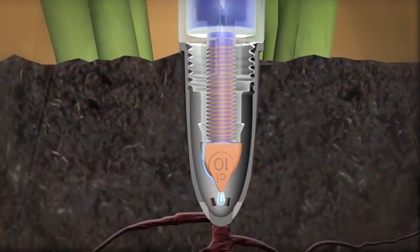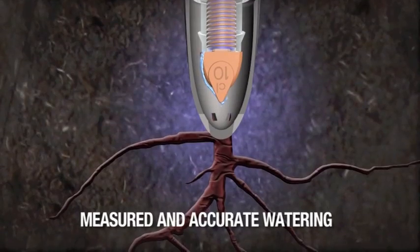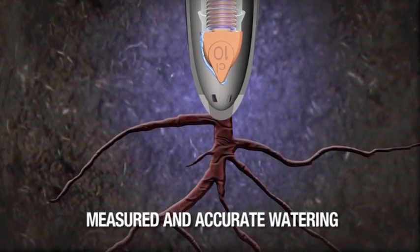In addition, the tip of the bullet head irrigator outlet releases water directly to the roots, avoiding waste through evaporation.